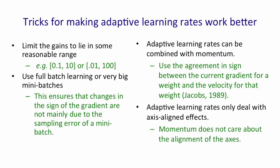So adaptive learning rates only deal with axis-aligned effects, whereas momentum doesn't care about the alignment of the axes. Momentum can deal with these diagonal ellipses and going in that diagonal direction quickly, which adaptive learning rates can't do.